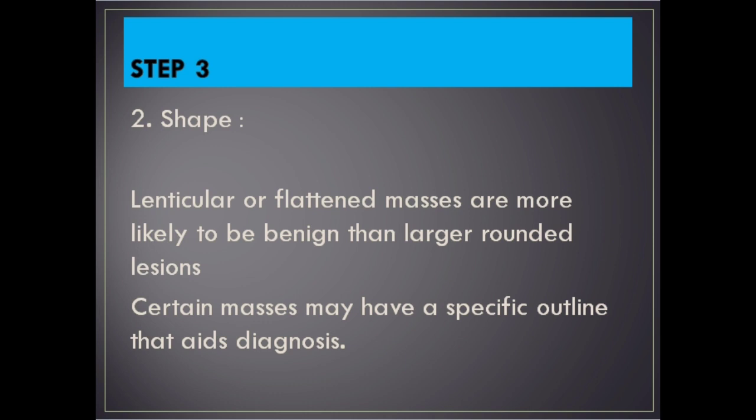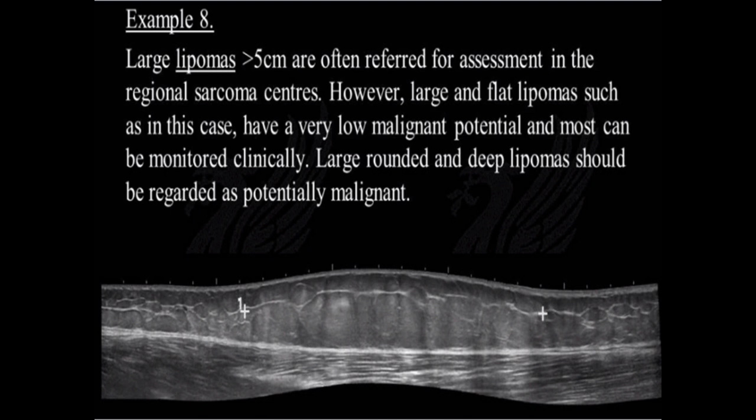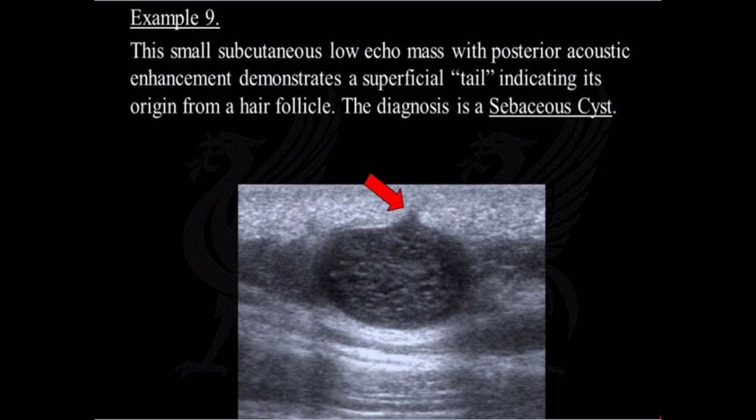Shape: Lenticular or flattened masses are more likely to be benign than larger rounded lesions. Certain masses may have a specific outline that aids diagnosis. Example 8: Large lipomas more than 5 centimeters are often referred for assessment in regional sarcoma centers. However, large and flat lipomas have a very low malignant potential and most can be monitored clinically. Large round, nodular, and deep lipomas should be regarded as potentially malignant. Example 9: This small subcutaneous low echo mass with posterior acoustic enhancement demonstrates a superficial tail indicating its origin from a hair follicle. The diagnosis is a sebaceous cyst.